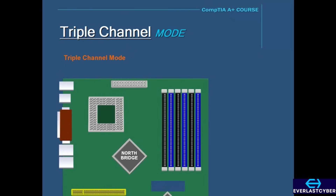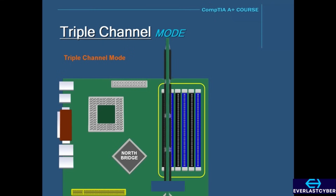Here is an example of a Triple Channel-capable motherboard. On this motherboard, there are six memory slots with two different colors. So if you're going to install three DIMMs on this motherboard, you must put the DIMMs in the same color-coded slots in order to utilize Triple Channel Mode, and those DIMMs must be identical.